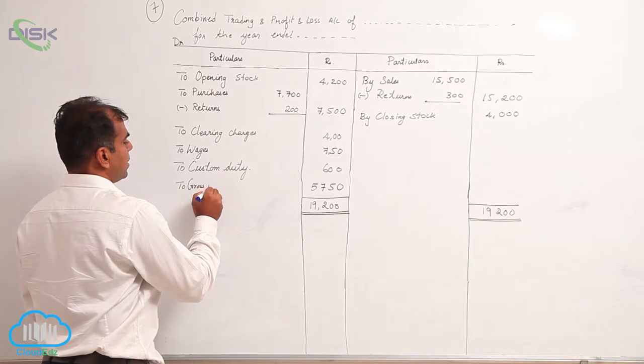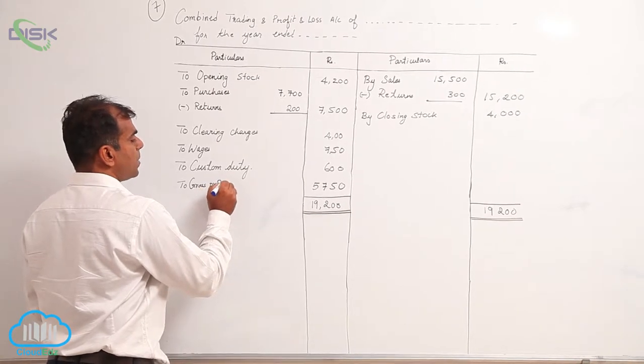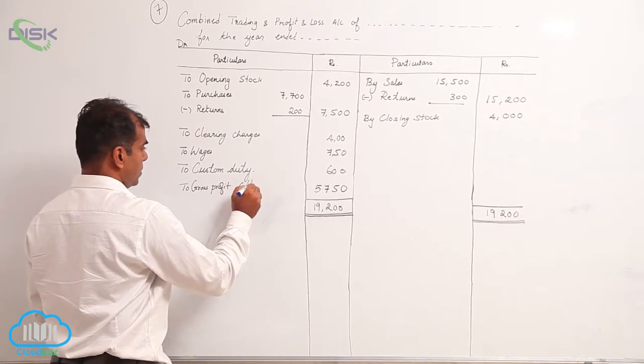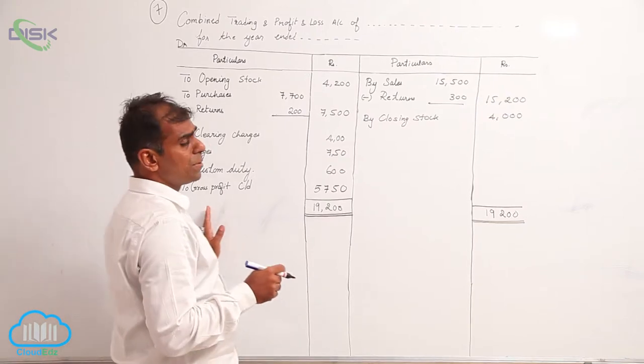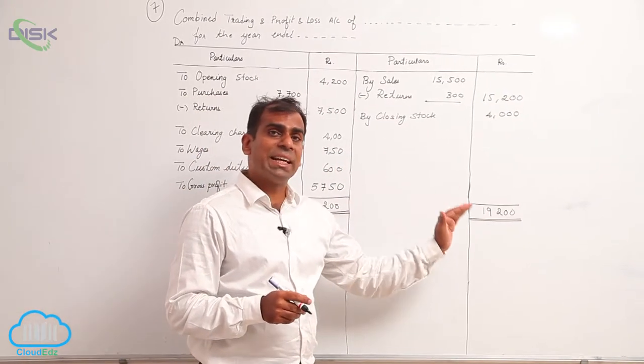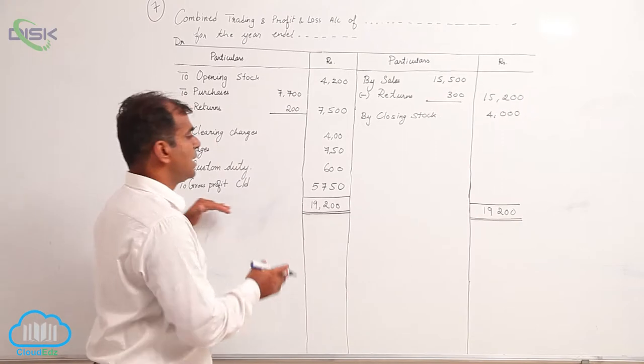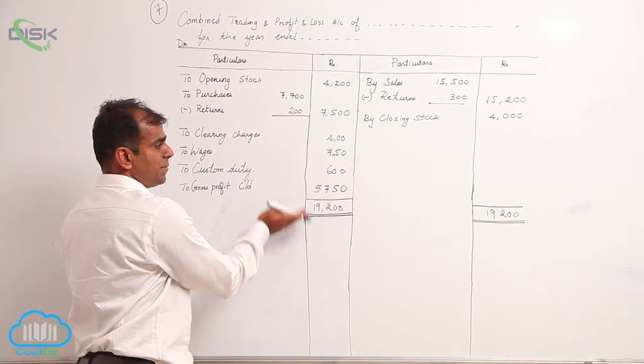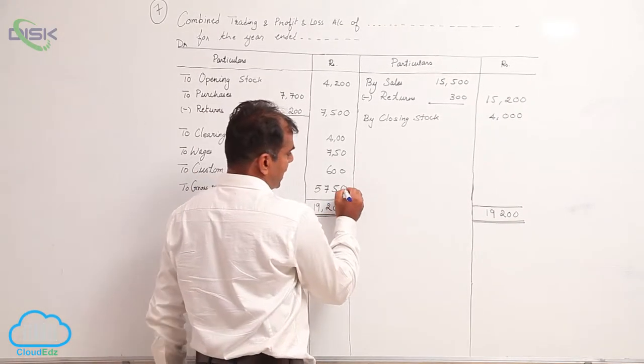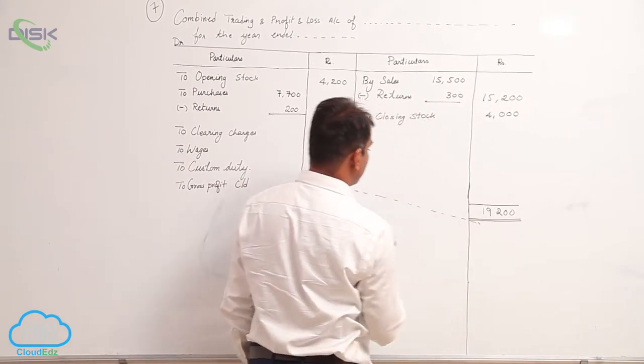Carry it down to gross profit, carry it down. This would appear on the credit side of our P&L, so the next portion of this format we will be taking as P&L account.